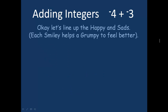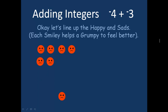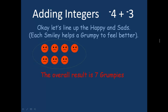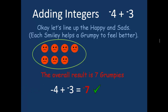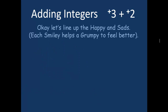Another sum: negative four plus negative three. We've got four unhappy faces, and negative three means we've got another three grumpy faces. The overall result is seven grumpies. Negative four plus negative three equals negative seven.